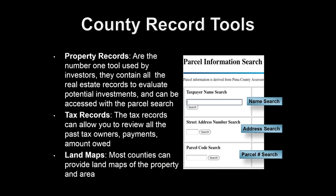To summarize: property records are the number one tool for investors. They contain the real estate records we need, while the treasurer or tax collector has the tax records to review delinquent payments and other tax liens on the property. Many counties also have an interactive map program for searching properties. Usually, using the parcel number is the fastest approach — if you type in 'John Doe,' he may own five properties, and you'd have to determine which one you're looking at. With the parcel number, it takes you directly to that property.